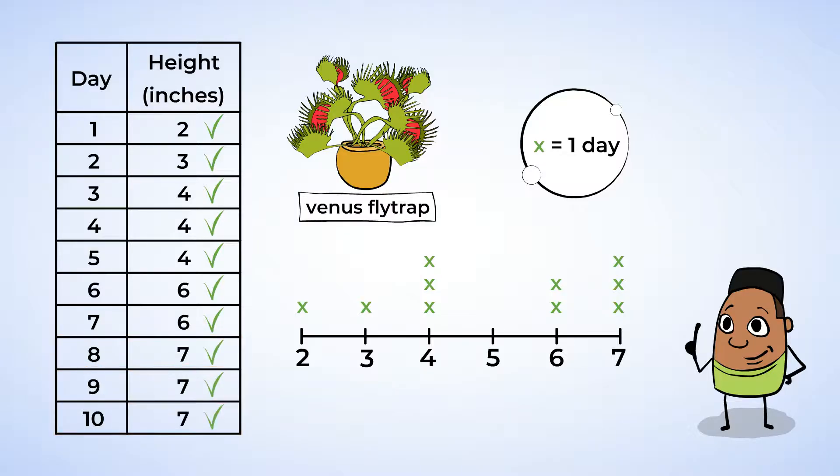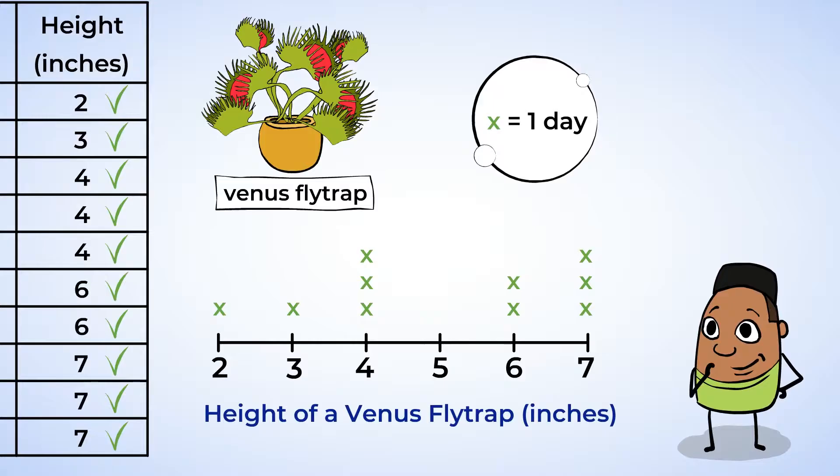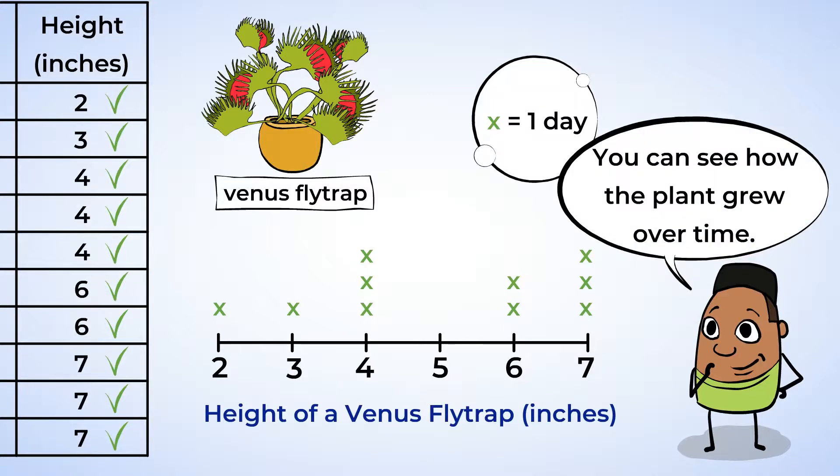Now, all that's left is the title. We can call this height of a Venus flytrap, inches. Great job making the line plot. Let's see what the data tells us. It looks like there was never a day where the plant measured at 5 inches. It must have had a growth spurt that night. By looking at the line plot, you can see how the plant grew over time. First it grew for a while, then it stayed the same height at 4 inches for 3 days. Then it grew fast to 6 inches, and slowed down again. Neat!